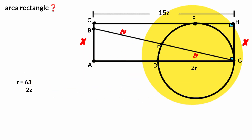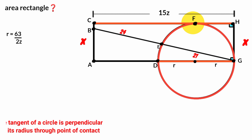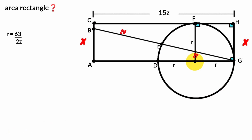Since this is a diameter, its midpoint is the center of the circle. We see this side touches the circle at this point, making it a tangent. By the rule that the tangent of a circle is perpendicular to its radius through the point of contact, if we draw the radius from the point of contact the angle formed is a right angle. Call the center O. Looking at this quadrilateral, three of its angles are right angles, making it a rectangle or square — in both cases opposite sides are equal. Since this side is R, this must also be R.